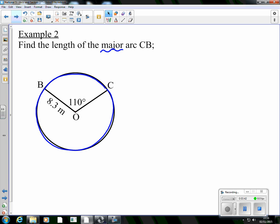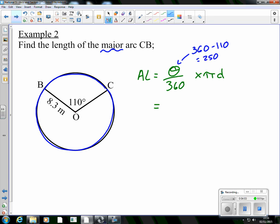So arc length, same again, is theta over 360—that's the fraction that we have—but this time it's of the circumference. Here, we know from the last video that theta is not 110, it's 360 subtract 110, so 250. So 250 over 360 times pi.